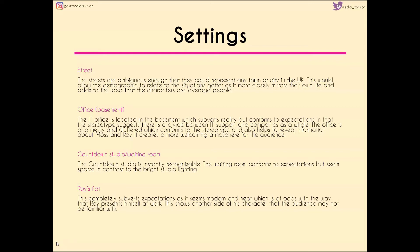The countdown studio and waiting room I've grouped together. The countdown studio is instantly recognizable — it has very high key lighting and wouldn't need much explaining for the audience. The waiting room, where Prime turns up and gives Moss the card, conforms to expectations: neat and tidy, matching Moss's personality well, right down to the little tub of biscuits on the table. It does seem quite sparse, particularly when contrasted with that bright studio lighting just before we see Moss inside.